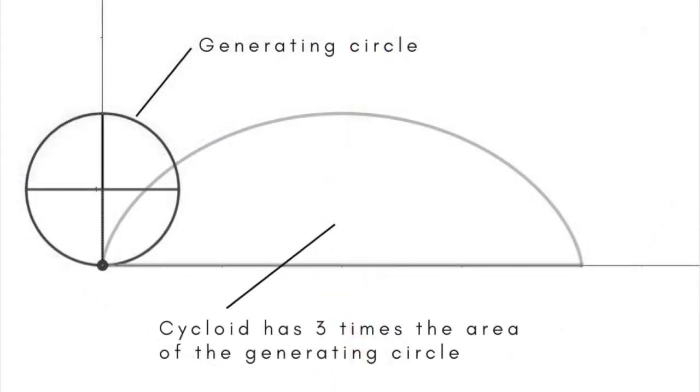In 1634, the French mathematician Gilles de Roberval showed that the area under a cycloid is three times the area of its generating circle.